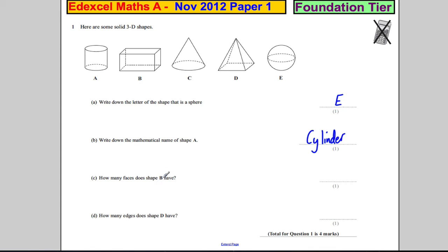How many faces does shape B have? Look at shape B and we're going to count the faces. So I'm going to color the faces, the opposite faces in the same color. There's one face, two faces, three faces along the top, four faces, and then five faces along the front and then six faces along the back.